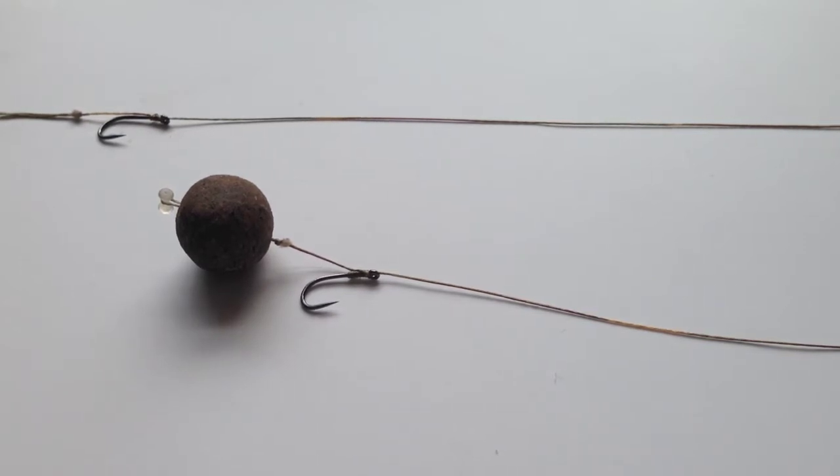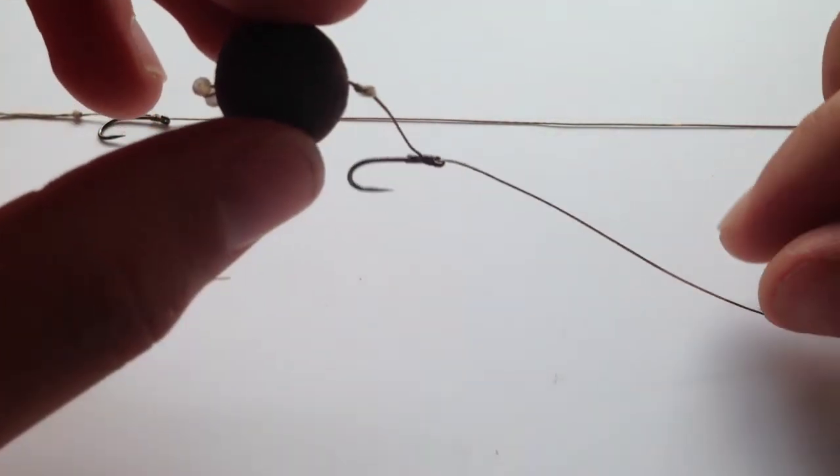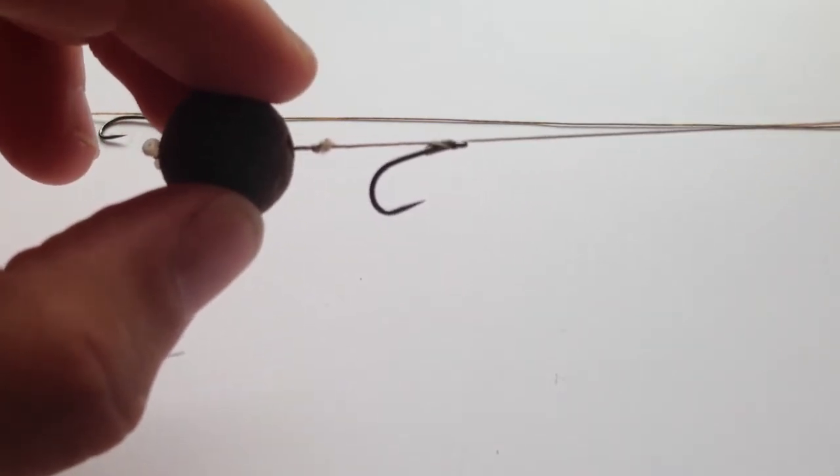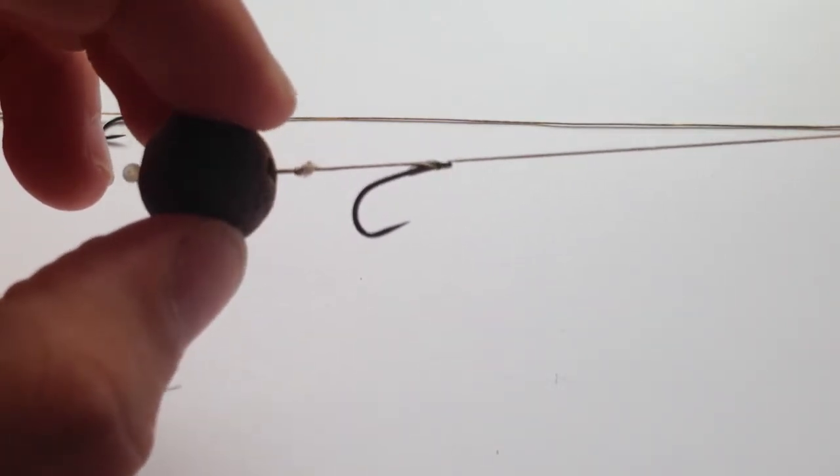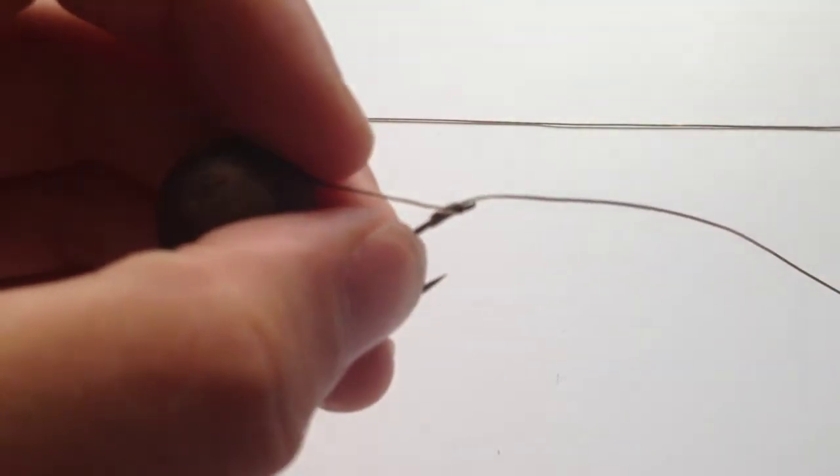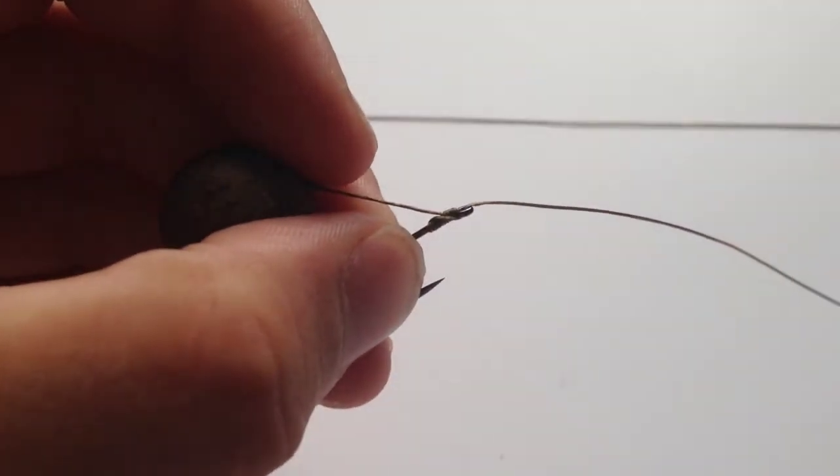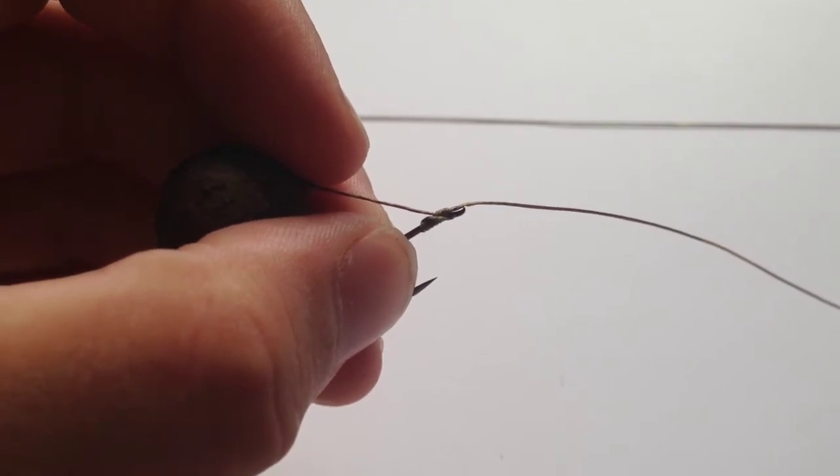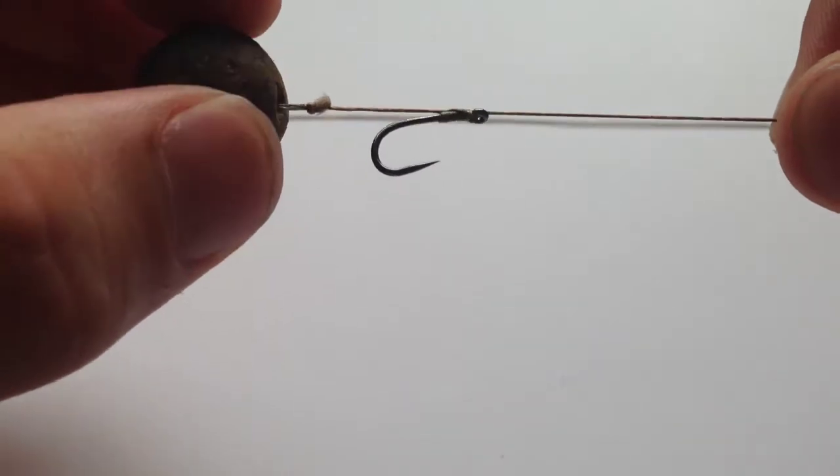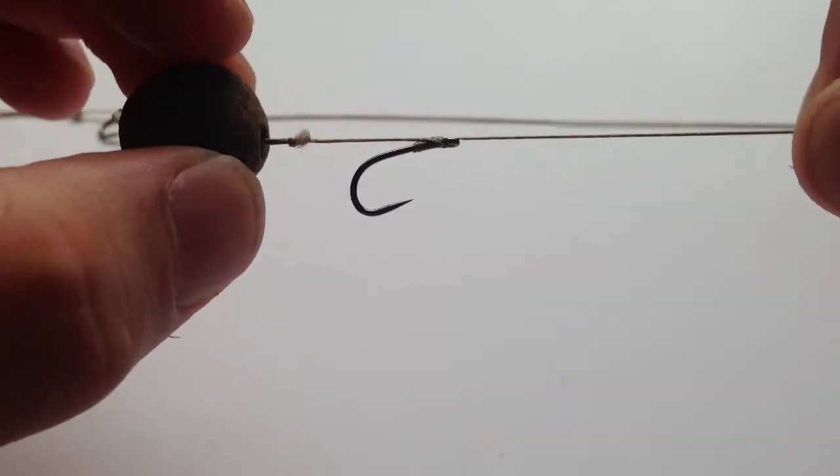When compared to the hair rig, as you can see at the back there, this is the KD rig here. It's got quite an aggressive hook angle coming off the knotless knot, and this is down to the fact that the hair is thrown out of the knotless knot after two turns. That gives the hook the aggressive angle it needs to bite down into that bottom lip when the fish ejects the bait.